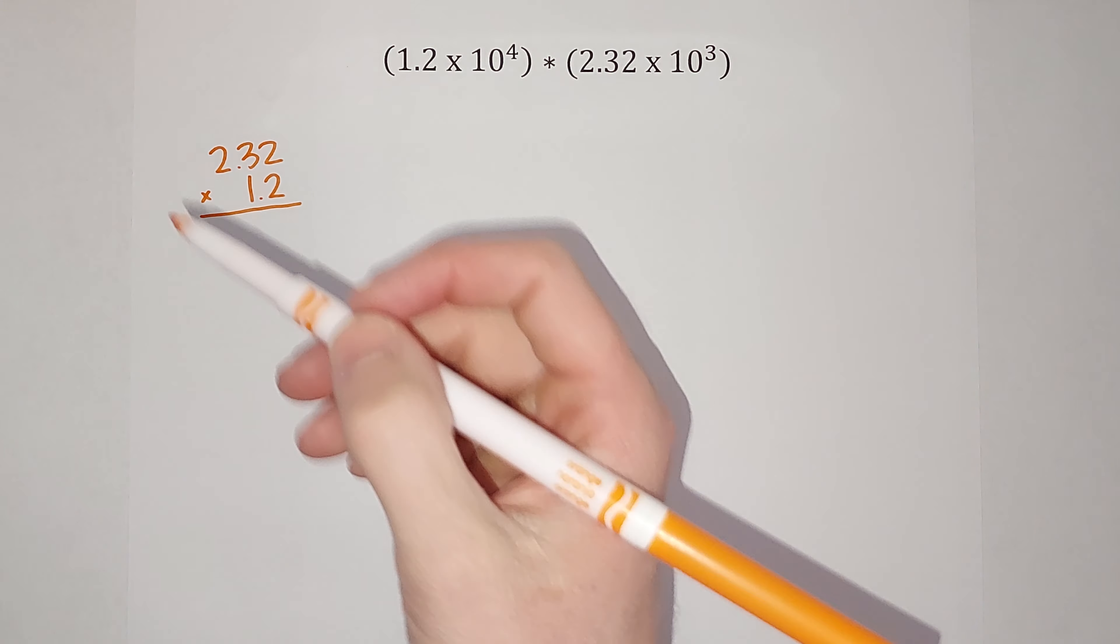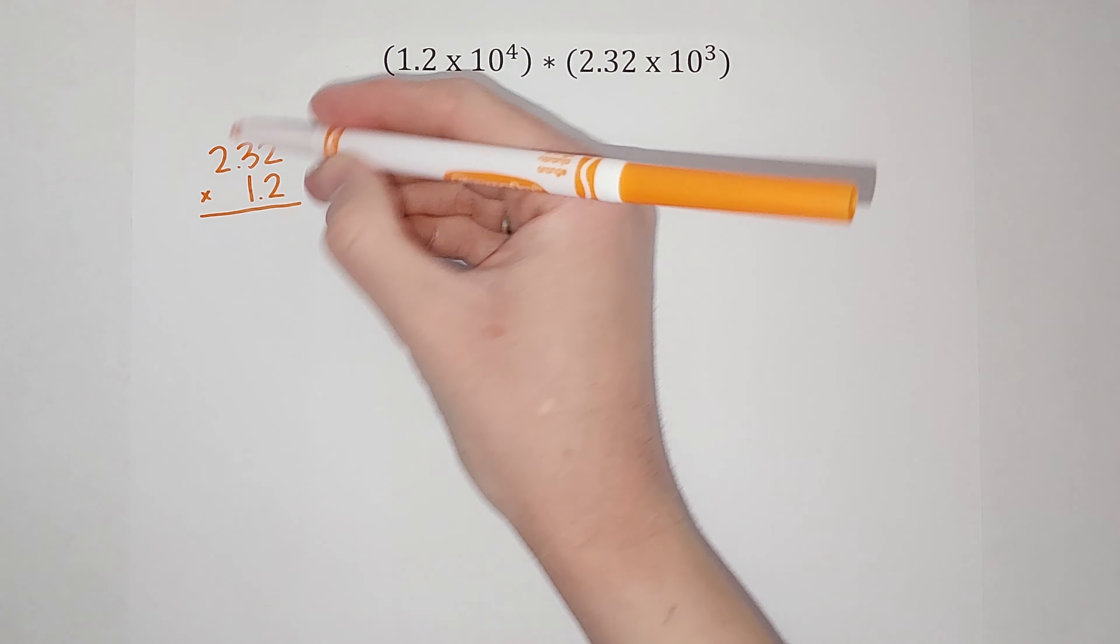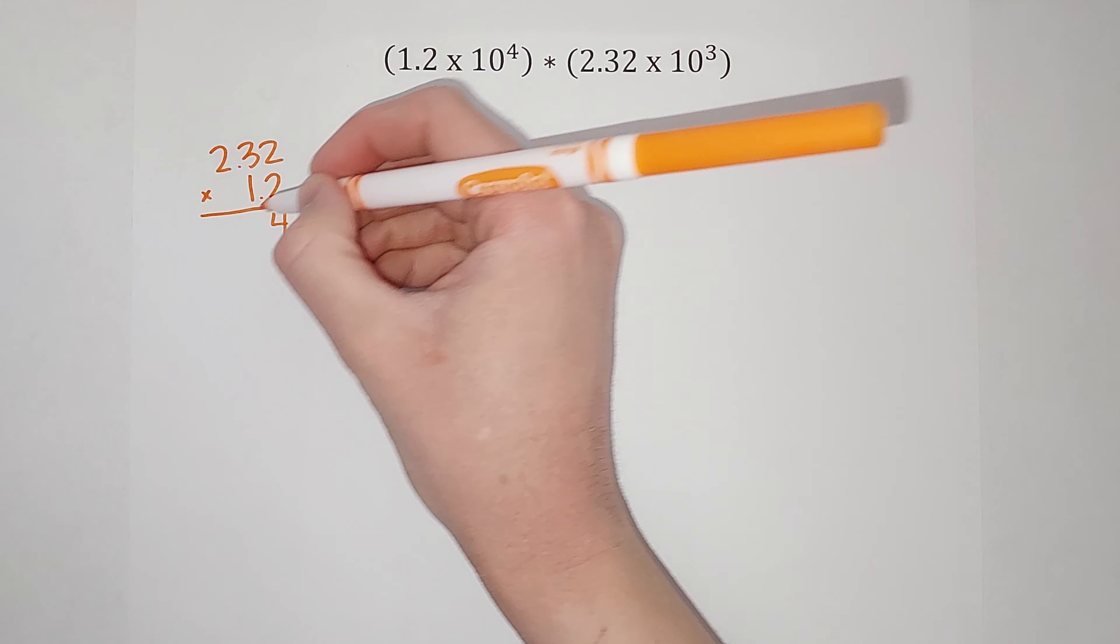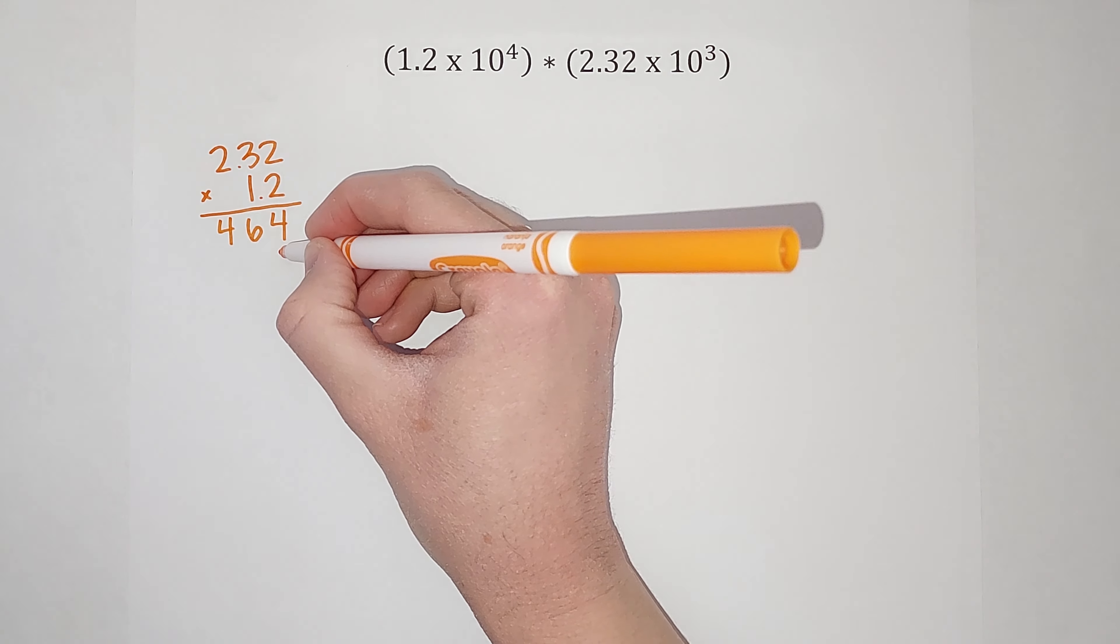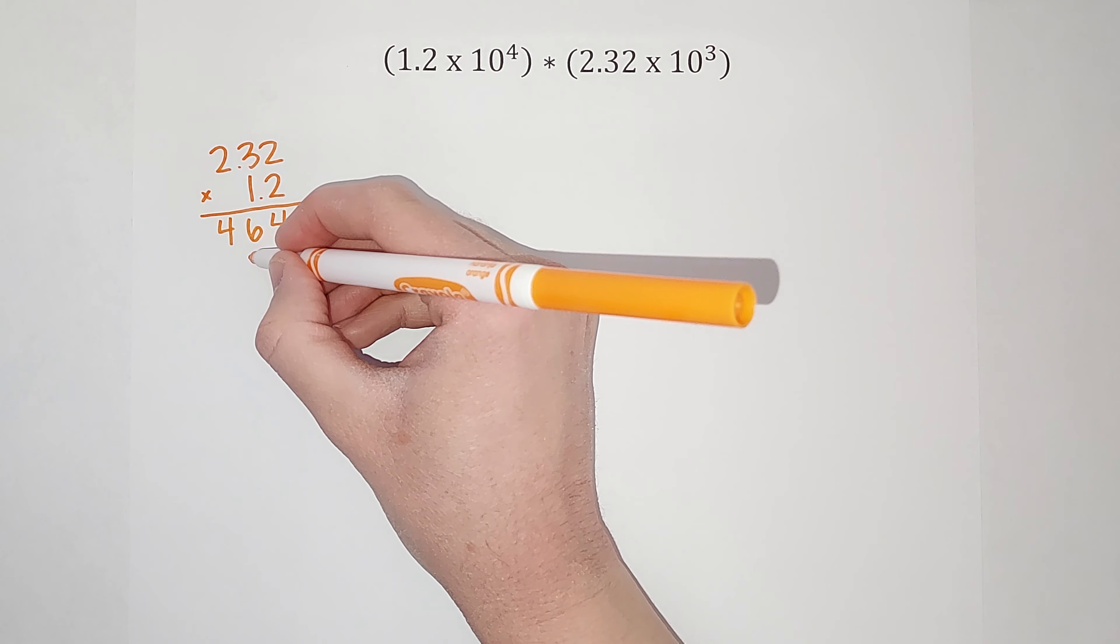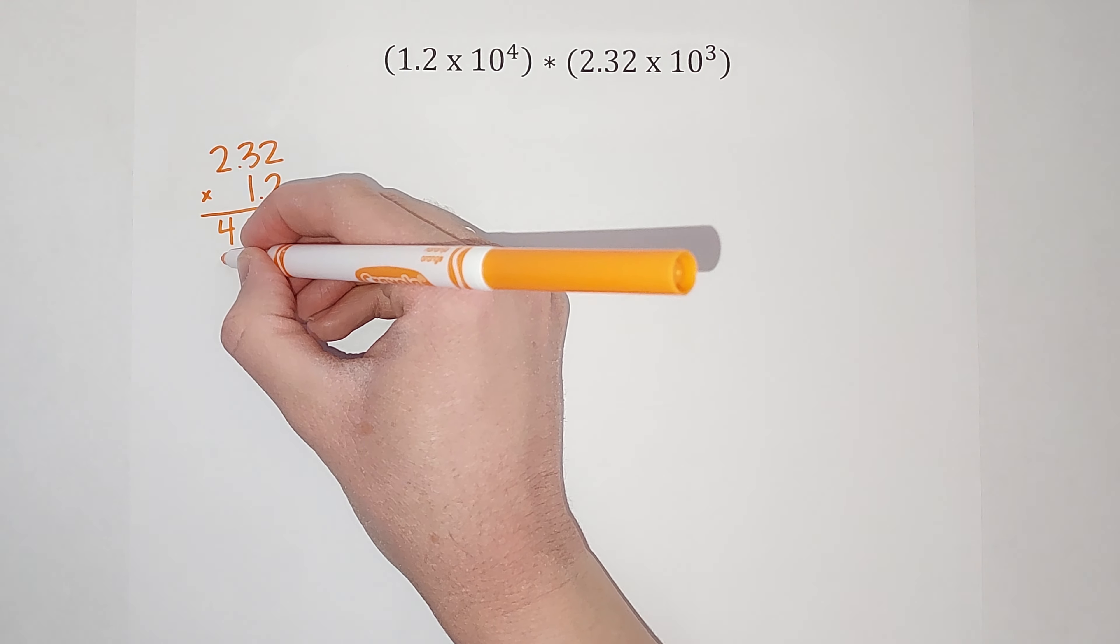When we multiply decimals, we don't have to line the decimals up. So I'm going to multiply these: two times two gives me four, two times three gives me six, two times two gives me four. Now my little placeholder there. One times two gives me two, one times three gives me three, one times two gives me two.